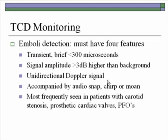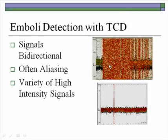TCD monitoring for emboli detection: there are four key criteria. The signal must be transient and brief — less than 300 microseconds. The signal amplitude must be greater than 3 decibels higher than the background. It must be a unidirectional Doppler signal. And it must be accompanied by an audio characteristic, often a snap, a chirp, or a moan. Emboli signals are most frequently seen in patients with carotid stenosis who may be embolizing, prosthetic cardiac valves, or PFOs.